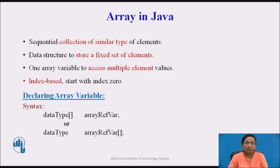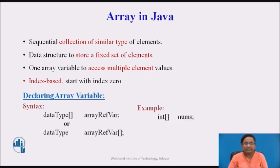Here is how to declare an array variable in Java. There are two ways of declaration of array. First: data type with square brackets, then the name of the array variable. The second way is data type, space, name of array variable. Here is an example — an integer array declared with array name nums.